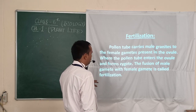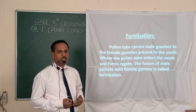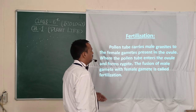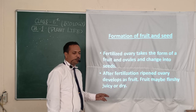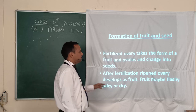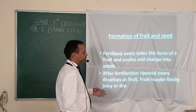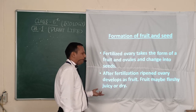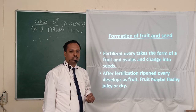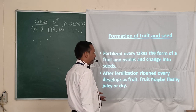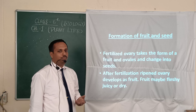The fusion of male and female gametes forms a zygote, which is then converted into an embryo. After fertilization, the ovary develops into a fruit, while the ovules present inside the ovary are converted into seeds. The ripened ovary becomes the fruit, which can be fleshy or dry.